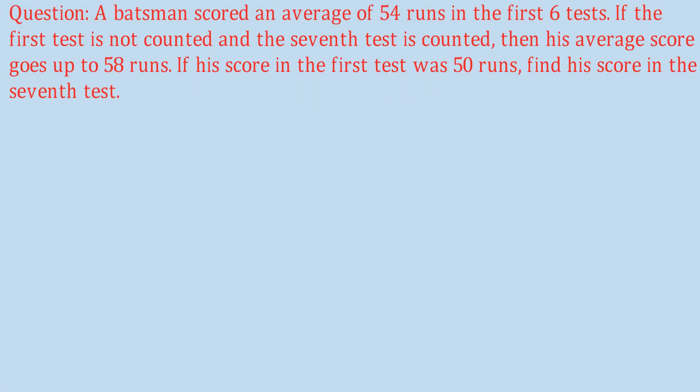Let us start with the question. A batsman scored an average of 54 runs in the first six tests. If the first test is not counted and the seventh test is counted, then his average score goes up to 58 runs. If his score in the first test was 50 runs, find his score in the seventh test. So his average from the first to the sixth test is known, and we know the average from the second to the seventh test.